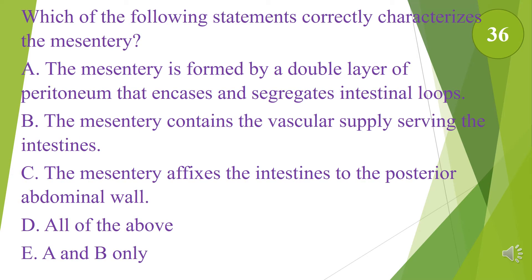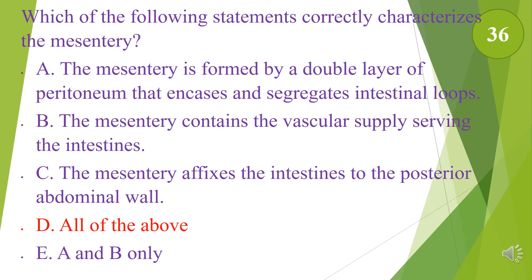Which of the following statements correctly characterizes the mesentery? A. The mesentery is formed by a double layer of peritoneum that encases and segregates intestinal loops. B. The mesentery contains the vascular supply serving the intestines. C. The mesentery affixes the intestines to the posterior abdominal wall. D. All of the above. The answer is D, all of the above.